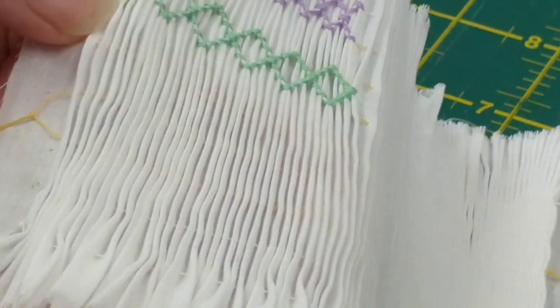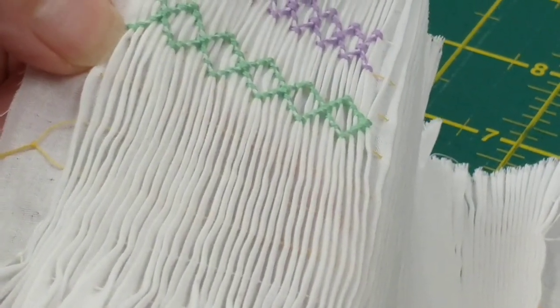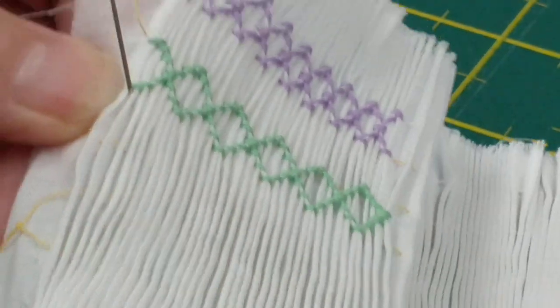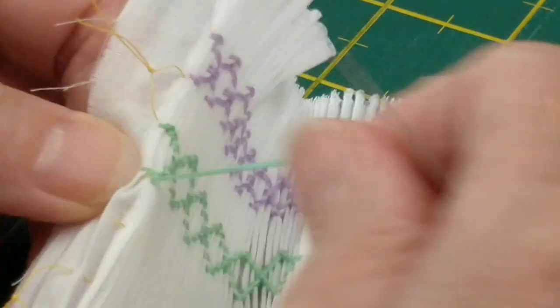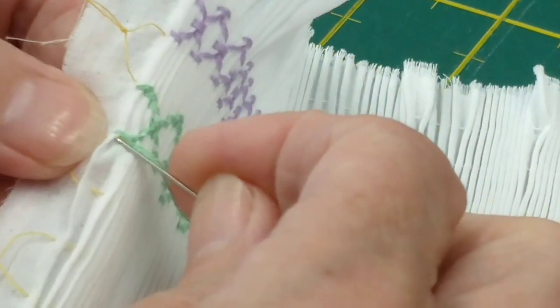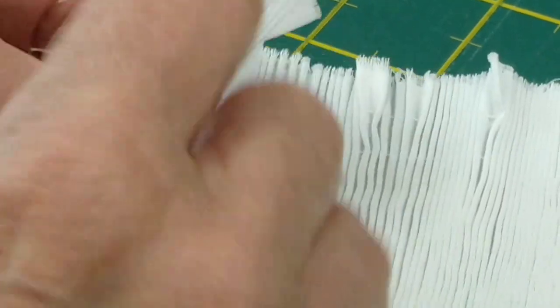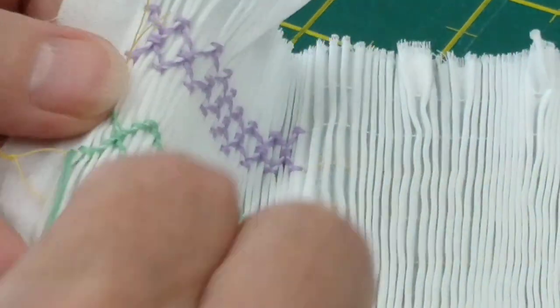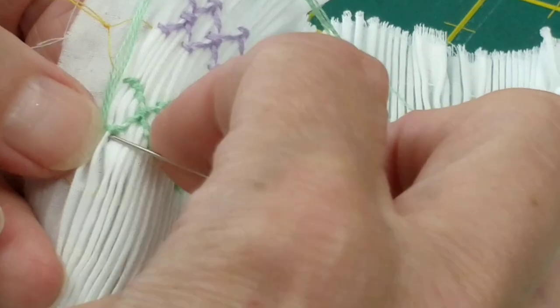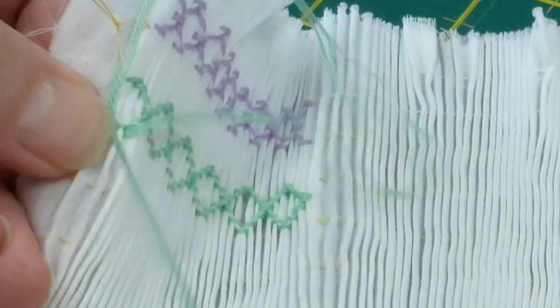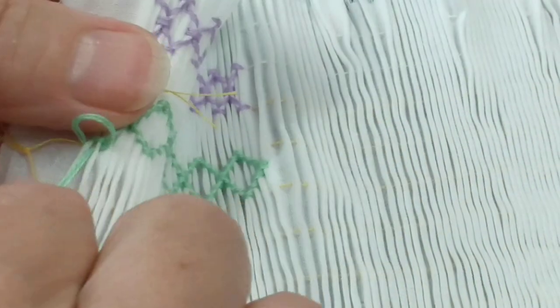So what I want to do is start off next to this first cable, so I come up in the valley between the two pleats and then go across to match my cable. Now because I'm going to be heading down, I need an up cable so that my thread comes out of the bottom of my stitch in the direction I'm going.